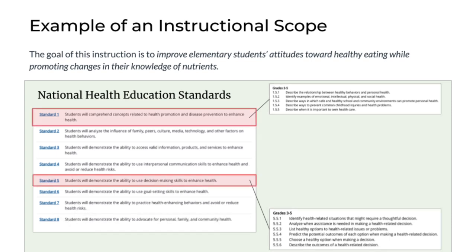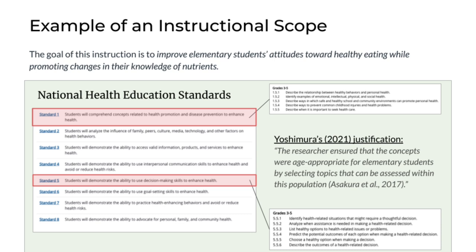For this particular project, the student drilled down to focus on just two of the eight standards: standard one and standard five. This decision was justified in the paper when the author wrote that the researcher ensured the concepts were age-appropriate for elementary students by selecting topics that could be assessed within the population. This is a nice example of looking at all possible relevant content but ultimately drilling down and justifying the in-scope content that's going to be included in the instruction.